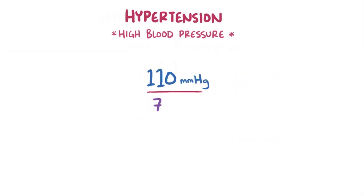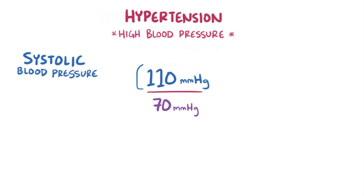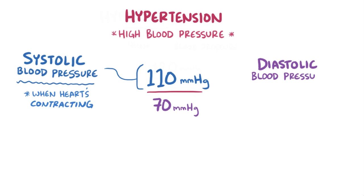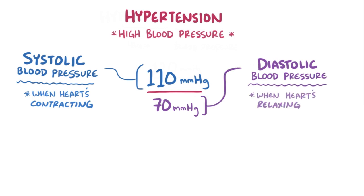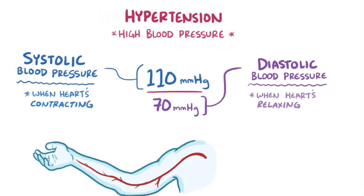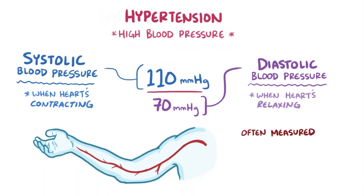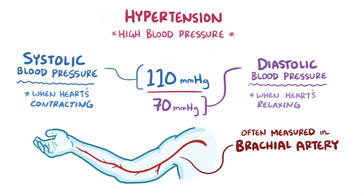Typically, it's represented by two numbers. The top number is the systolic blood pressure, which is the arterial pressure when the heart's contracting, and the lower number is the diastolic blood pressure, which is the arterial pressure when the heart's relaxing or refilling. Most of the time, blood pressure is taken in the brachial artery in your upper arm, because if the pressure is high there, it's probably high throughout all of the arteries.